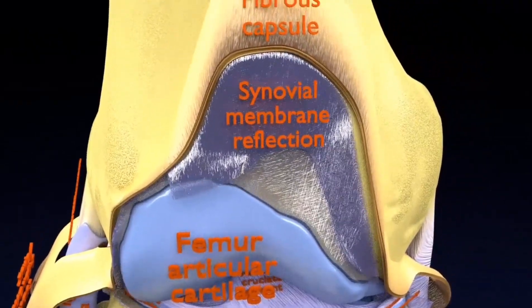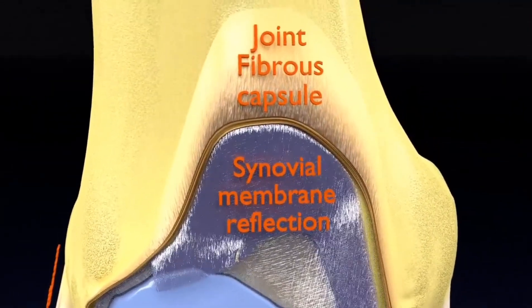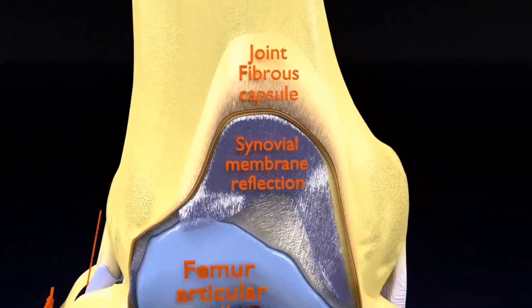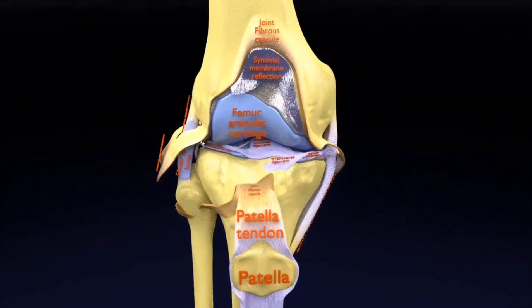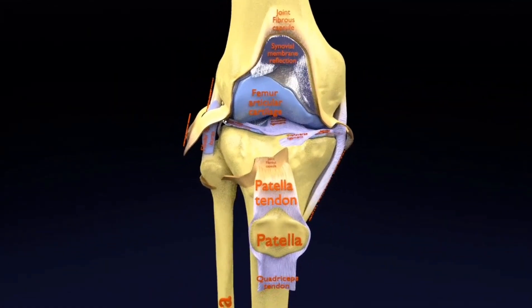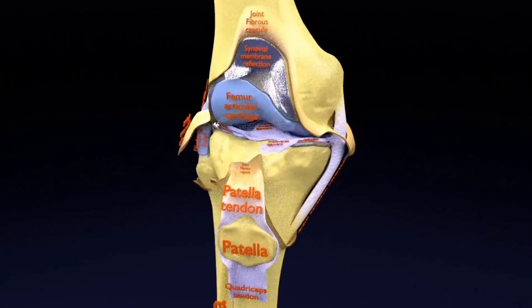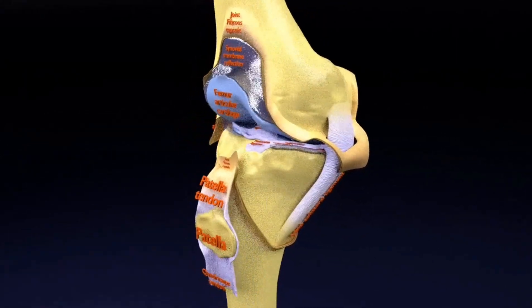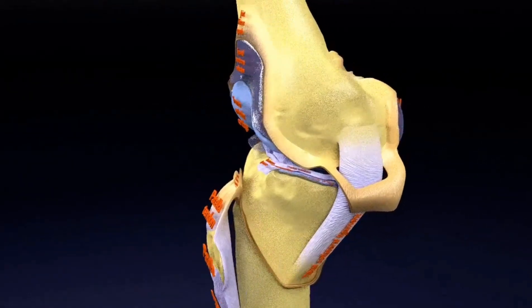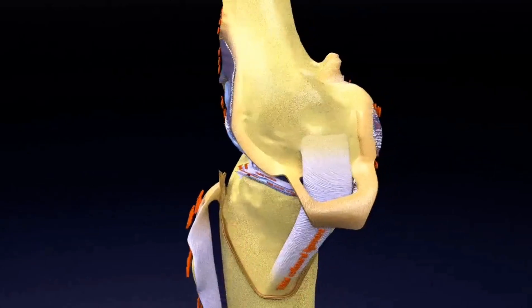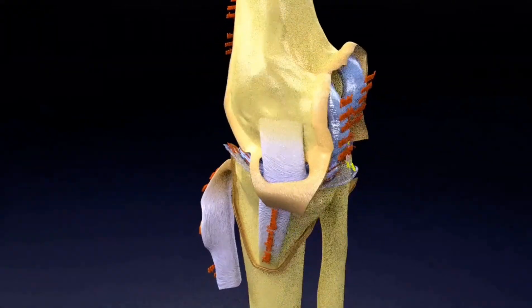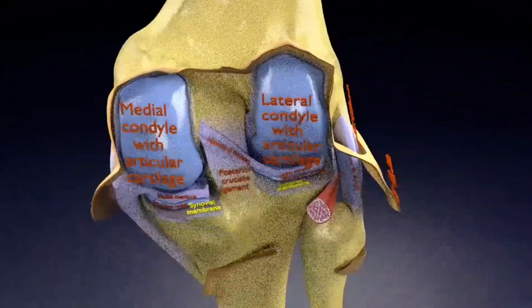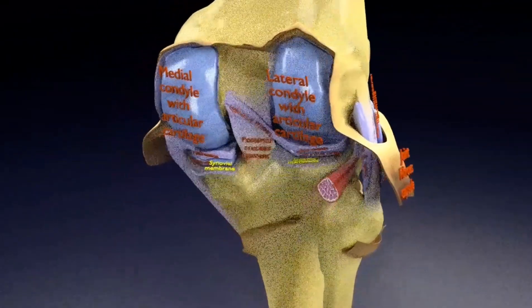Articular capsule: the articular capsule is a synovial and fibrous membrane separated by fatty deposits. Anteriorly, the synovial membrane is attached on the margin of the cartilage both on the femur and the tibia. But on the femur, the suprapatellar bursa extends the joint space proximally.